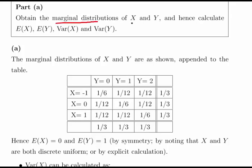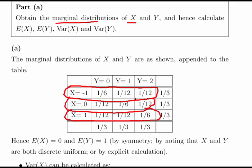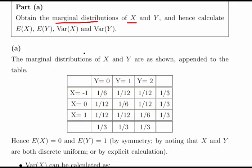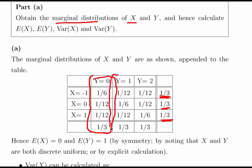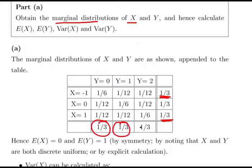The marginal distribution of X is essentially the row totals. We add up each row: 1/6 plus 1/12 plus 1/12. Writing 1/6 as 2/12, we get 2/12 plus 1/12 plus 1/12 equals 4/12, which gives us 1/3. The same calculation applies to the other rows, giving 1/3 and 1/3. Likewise, for the marginal probabilities of Y, we take the column totals, and we also get 1/3, 1/3, and 1/3.